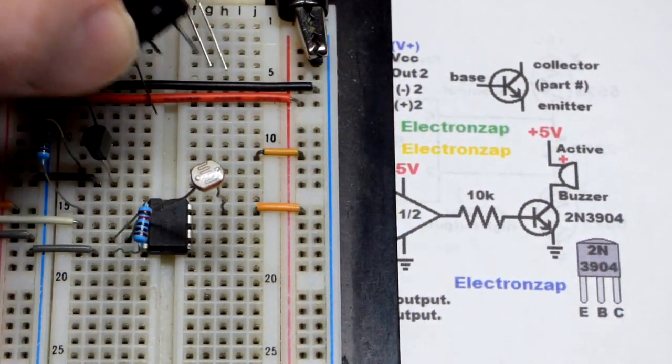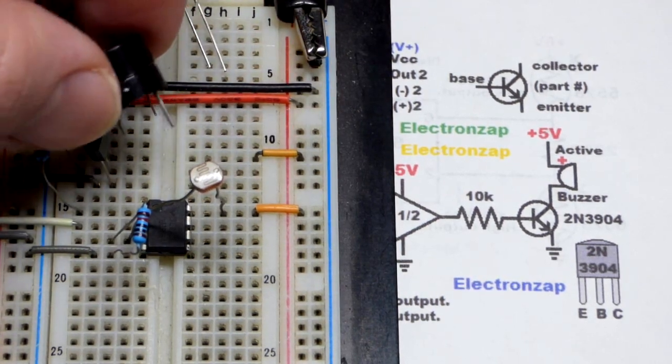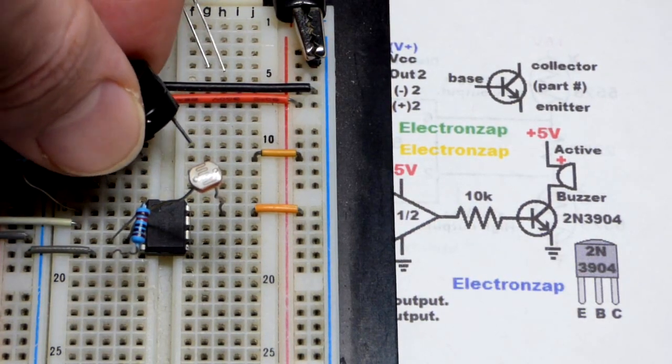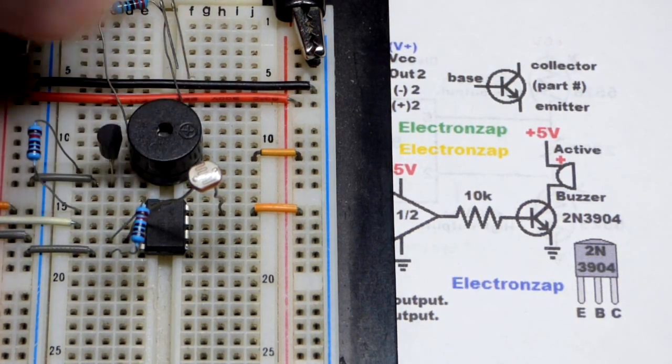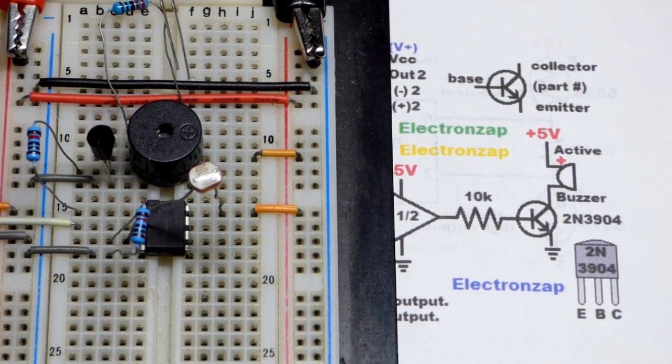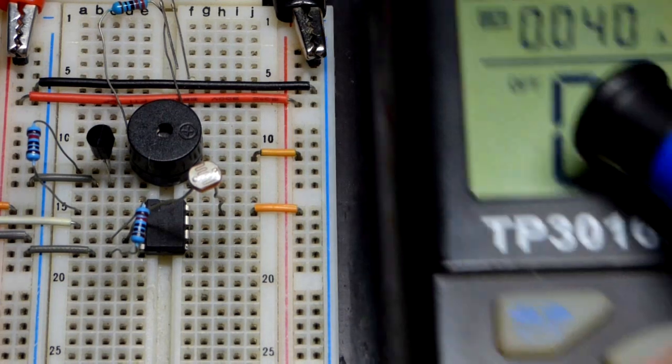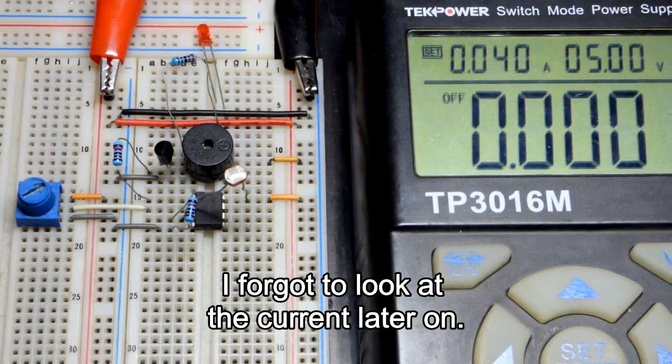That side's more positive. I accidentally put it in backwards before, it just didn't buzz when it should have. We're going to go straight across right there. The other pin went to that top one. I know it's kind of hard to see when I inserted it. Now I'm going to turn the power on. We'll come back and see how much current it needs.